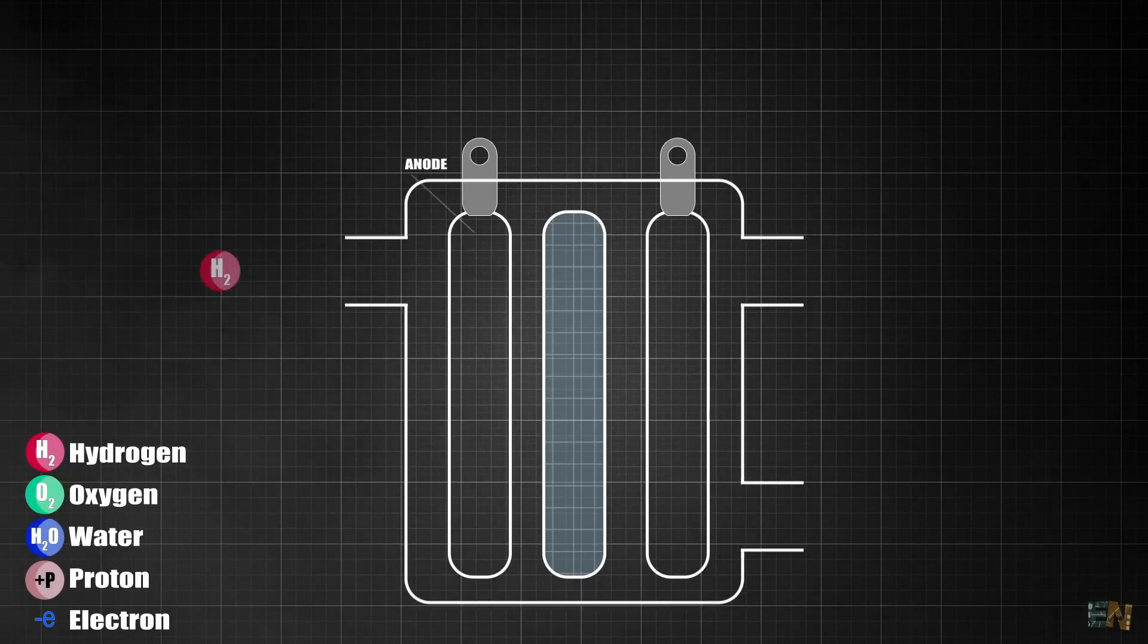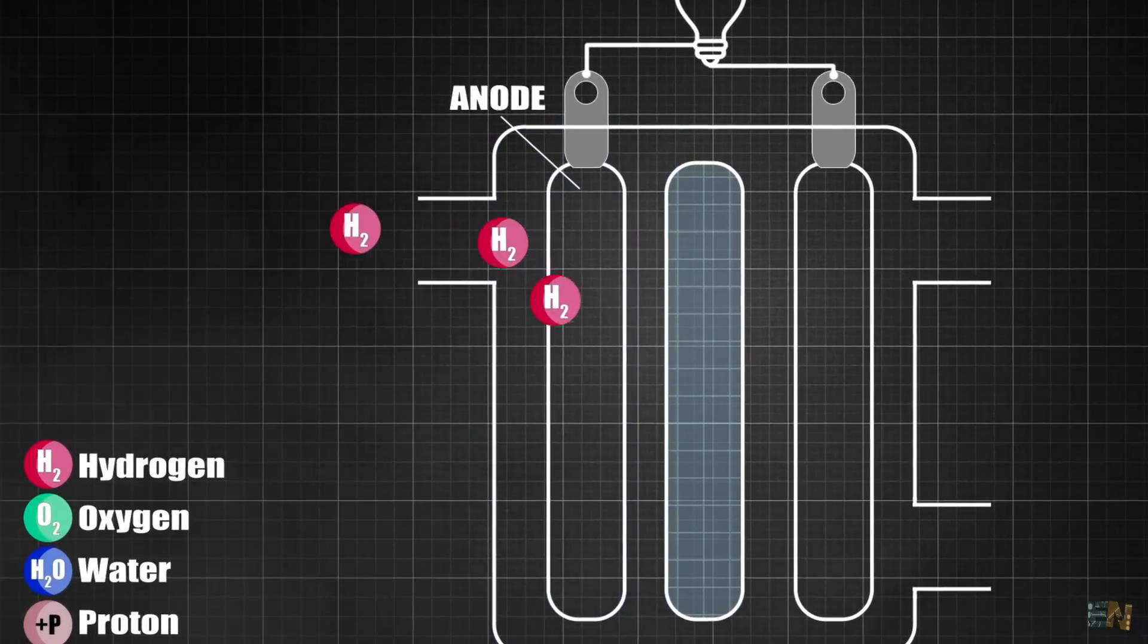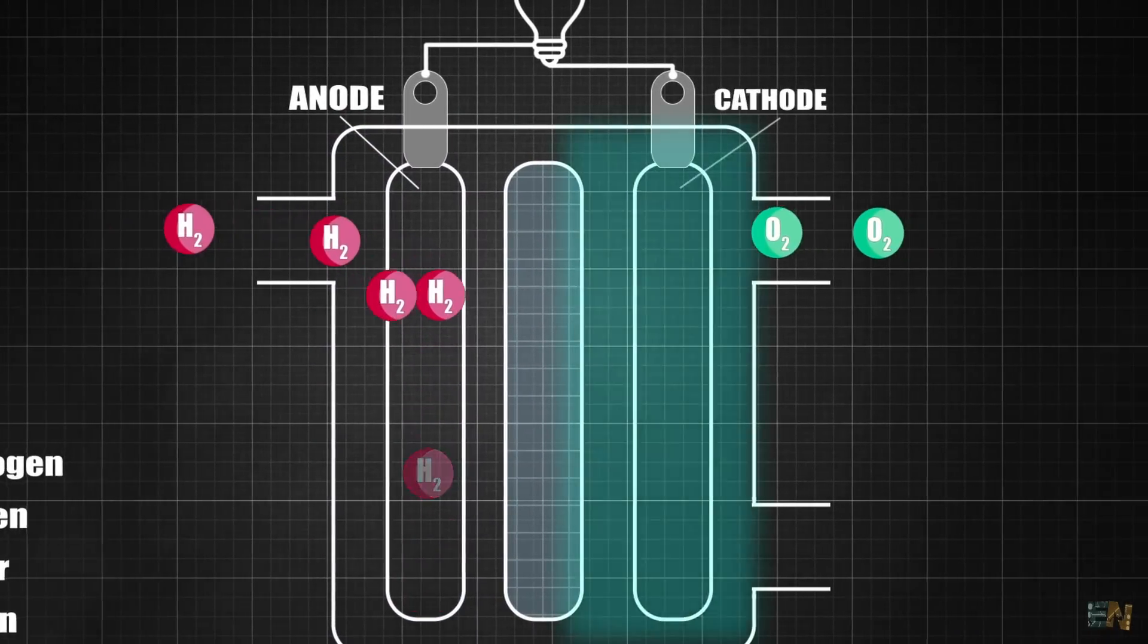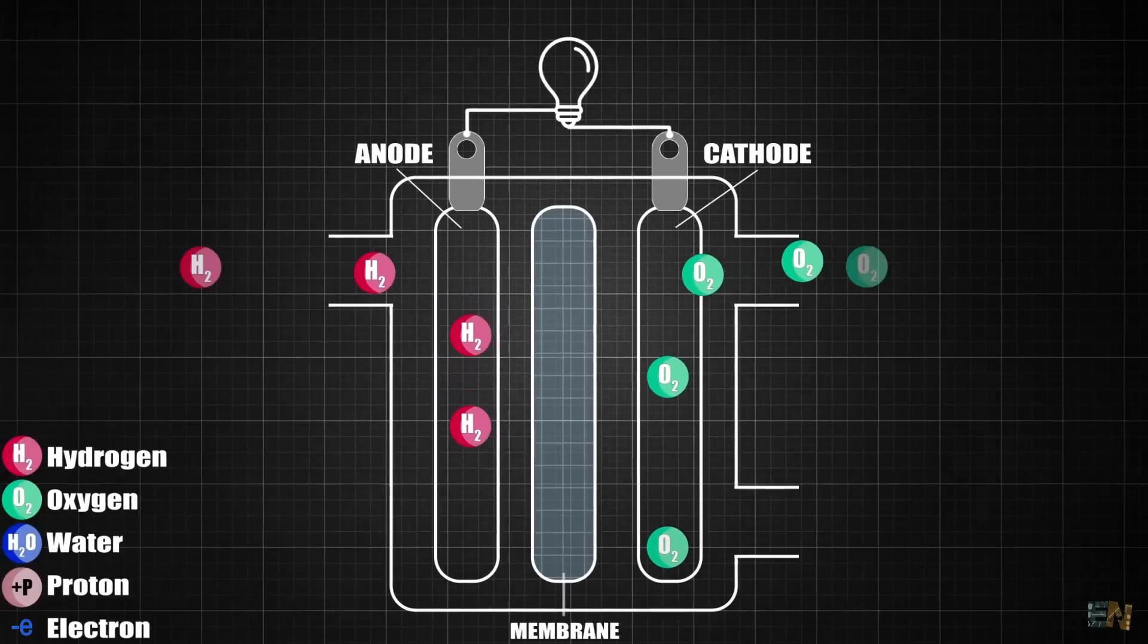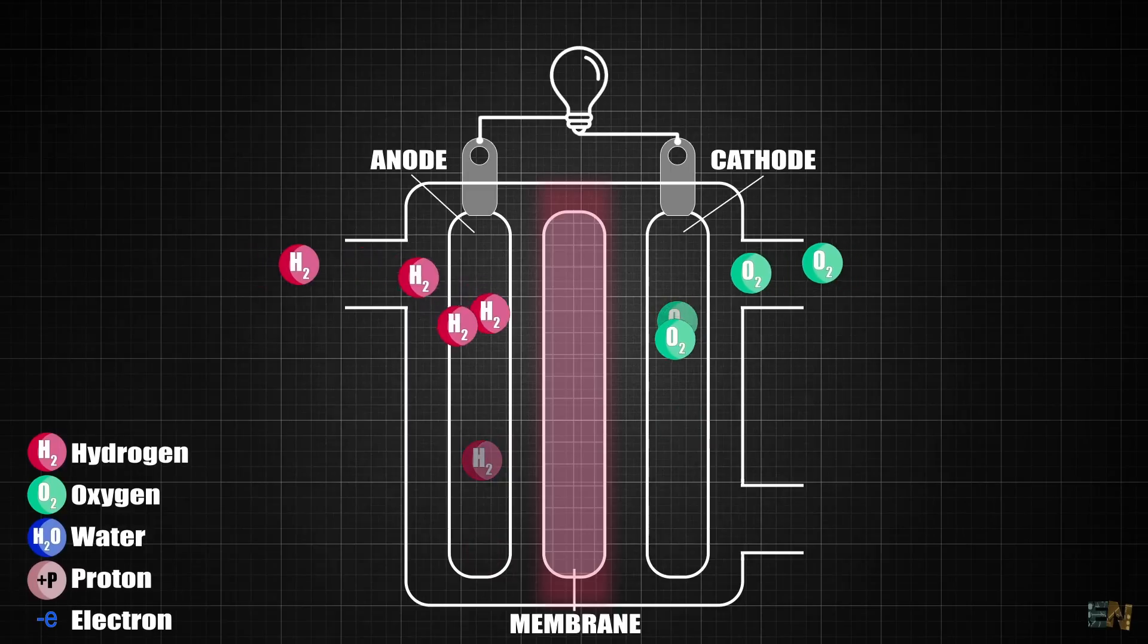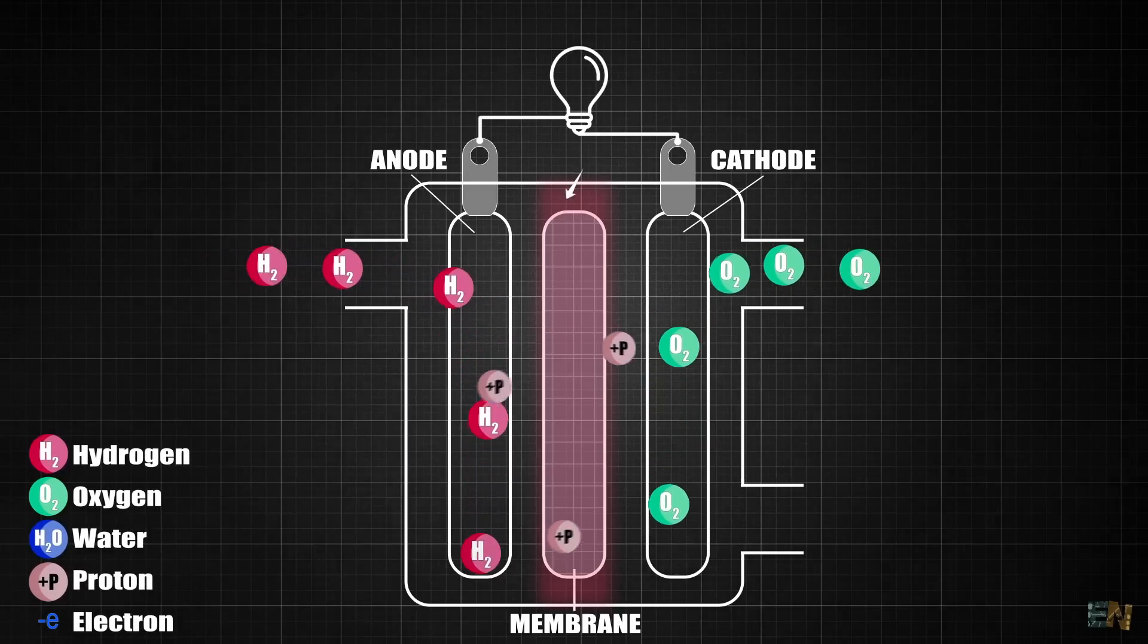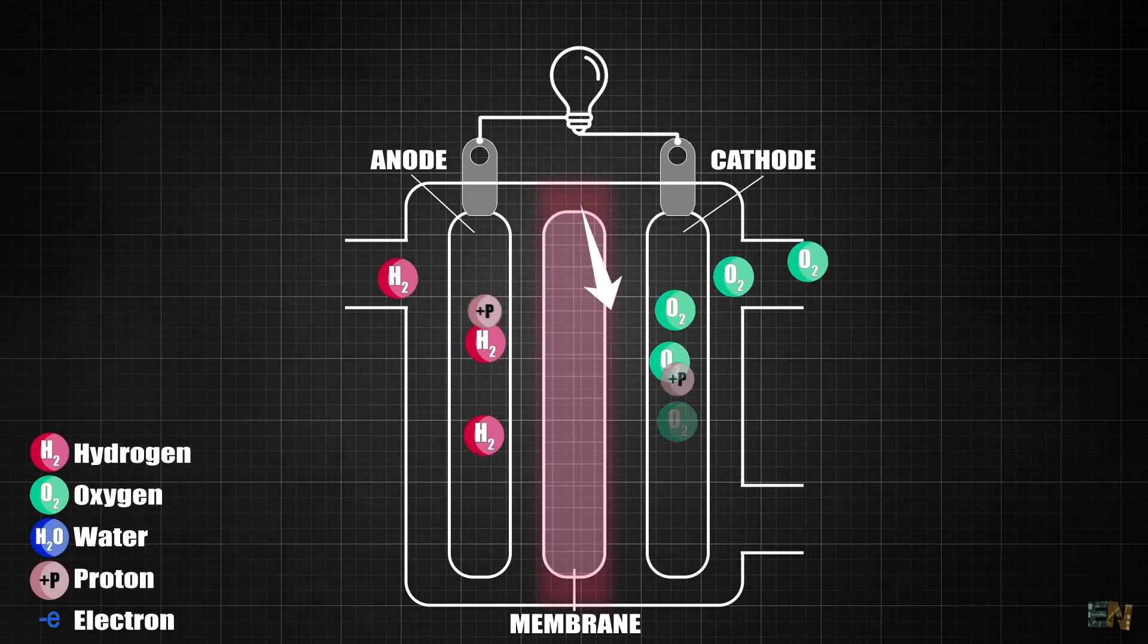So the hydrogen is fed into the anode compartment of the fuel cell, while the oxygen is fed into the cathode compartment. The anode and the cathode are separated by this electrolyte membrane that allows the ions to pass through, but not the electrons.